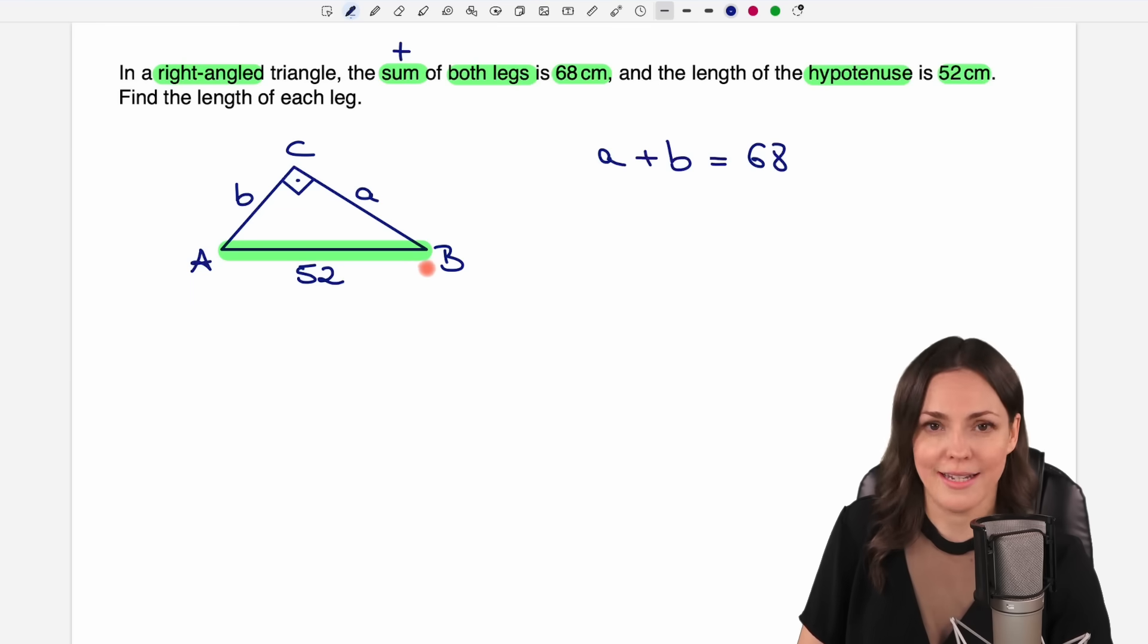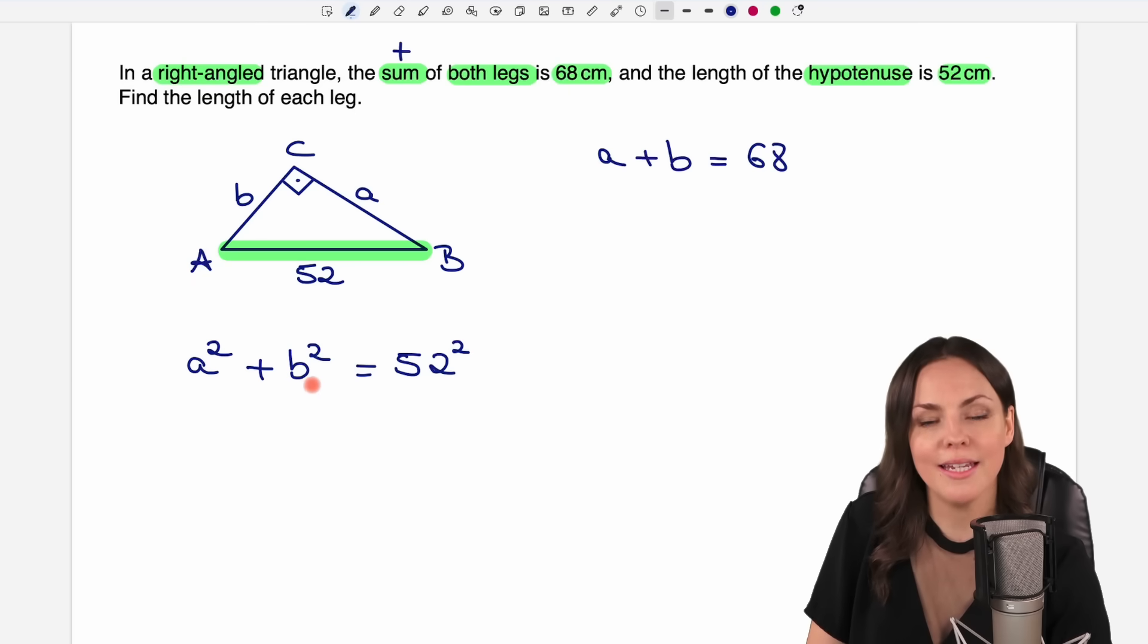But I can find a second equation by looking at my right triangle because I can use the Pythagorean theorem. That tells me that take one of your legs and square it. So take your A and square it. And if you add the square of the other leg, so B squared, then you get the hypotenuse squared, so 52 squared. And this gives me a second equation with A and B in here.